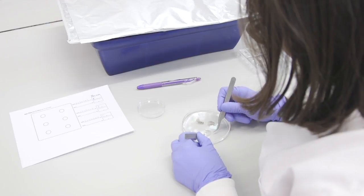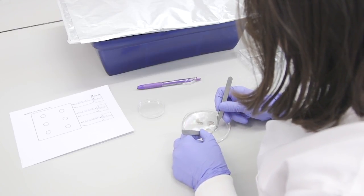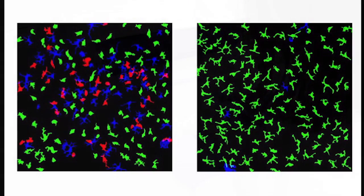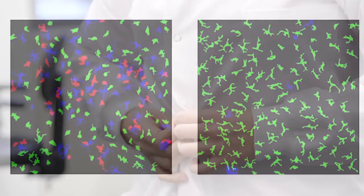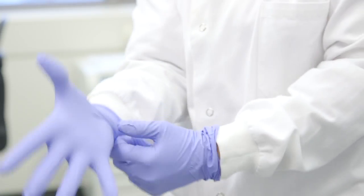The ear epidermal sheet preparation procedure is performed to isolate epidermal sheets that are suitable for staining and visualization using immunofluorescence microscopy. It is important to always wear a lab coat and gloves at all times during the procedure.